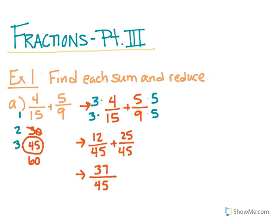Now we need to see if this can be reduced. If you know your prime numbers, you'll know that 37 is actually a prime number and will not be able to be reduced. So this is actually our final answer.